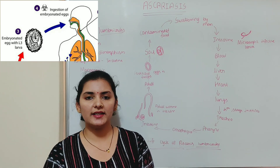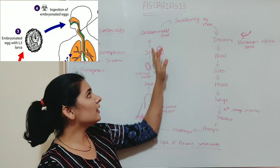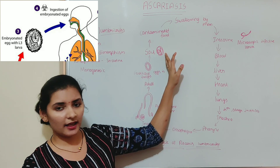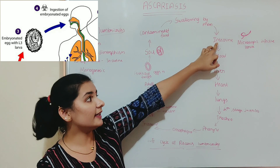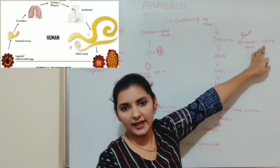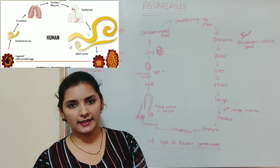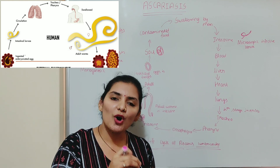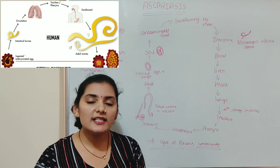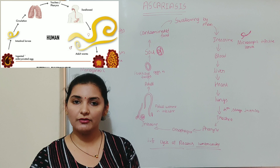Infection of a new healthy individual takes place when they ingest the infected egg through contaminated food or water. When the healthy individual swallows this infectious egg, it enters the intestine where the infective egg hatches into a small microscopic infective larva. This infective larva does not undergo development in the intestine; instead, it bores through the wall of the small intestine and enters the blood circulation or lymphatic system, taking a trip to different organs of the infected individual.